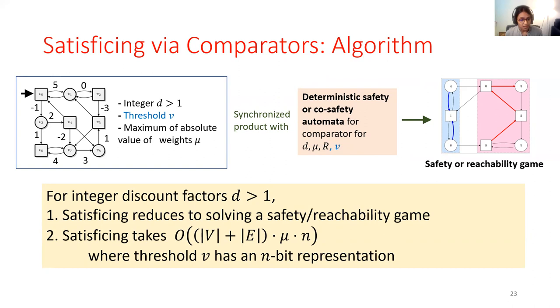And in fact, this algorithm is linear in the size of the input game. V and E refer to vertices and edges in the quantitative game, and mu and n come from the size of the comparator. I haven't gotten into this in the talk, but in the paper we show that for the value iteration algorithm for optimization, the complexity of that is V squared E. So this is much more efficient than that algorithm.